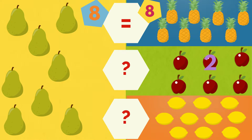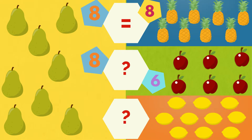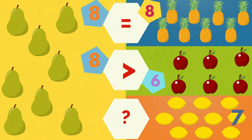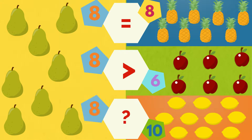One. Two. Three. Four. Five. Six. Six apples. The pears are more than the apples. One. Two. Three. Four. Five. Six. Seven. Eight. Nine. Ten. Ten lemons. The pears are less than the lemons.